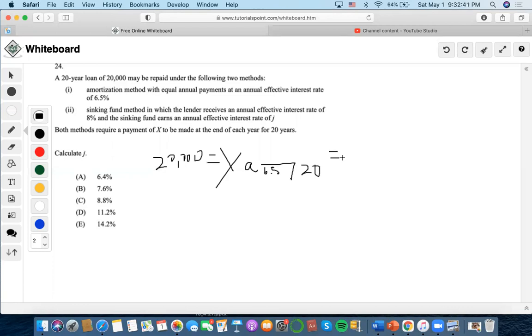The calculator. So we could do $20,000 for present value, 6.5 as the interest rate, 20 as the number of periods, zero future value, and then compute the payment, which is $1,815.13.